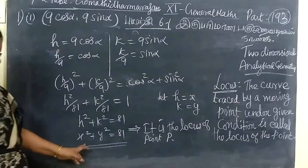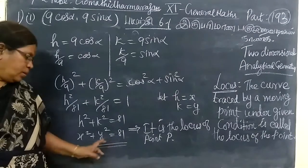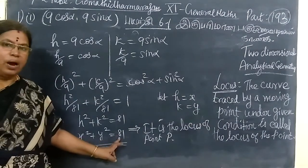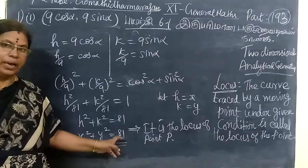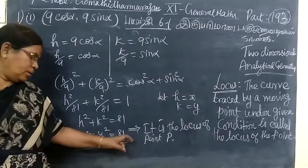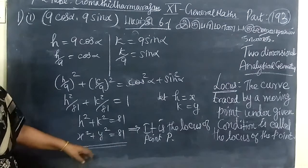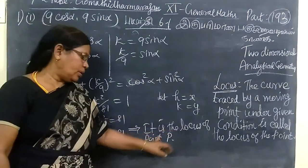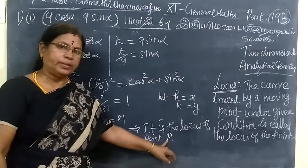It is X pair plus Y pair equal to 9 pair. 9 is the radius of the circle. After you learn the circle, this is the locus of point P.